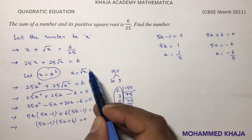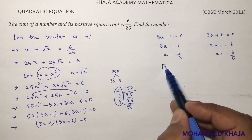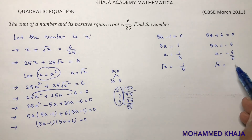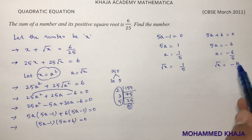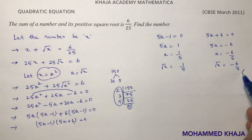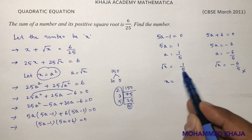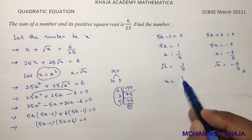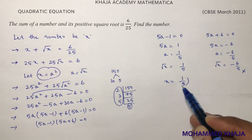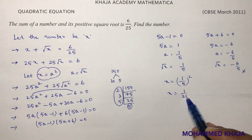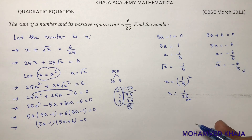Since a equals root x, substitute: root x equals 1/5 or root x equals minus 6/5. The question says positive value, so don't take the negative one. Take root x equals 1/5. Squaring both sides: x equals 1/25. The value of x is 1/25.